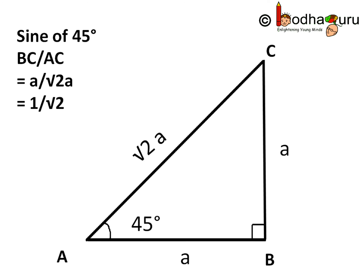Now let us calculate the trigonometric ratios for angle 45 degree. Sine of 45 degree is equal to BC by AC, opposite by hypotenuse. So it is equal to A by square root of 2A. A cancels, it becomes 1 by square root of 2.